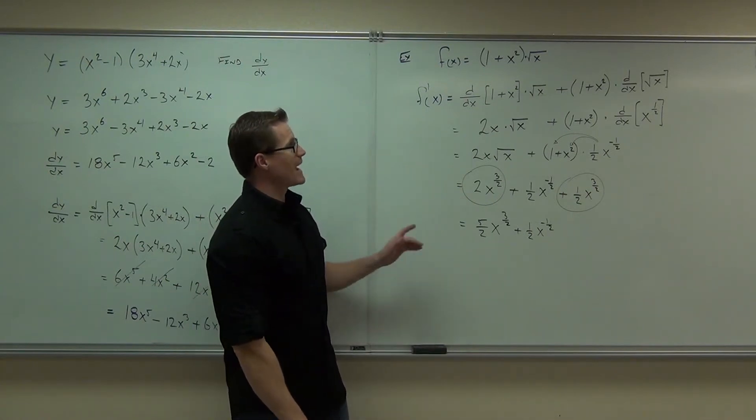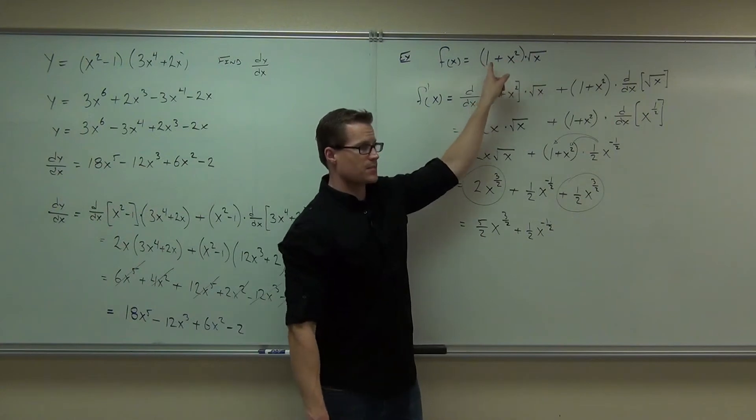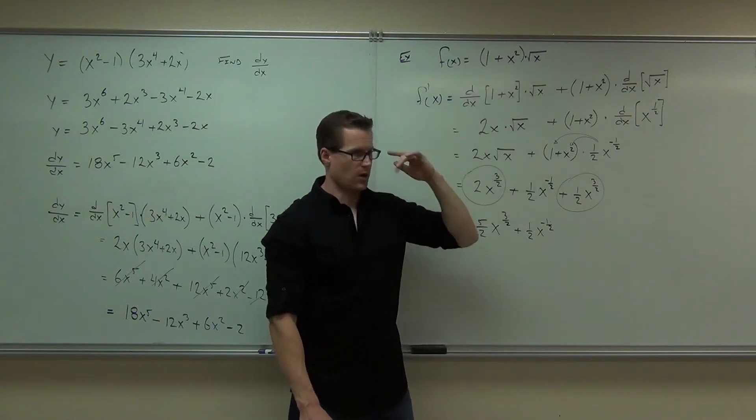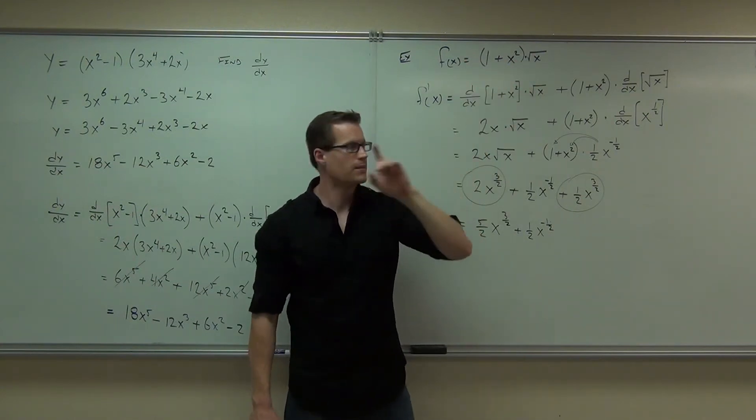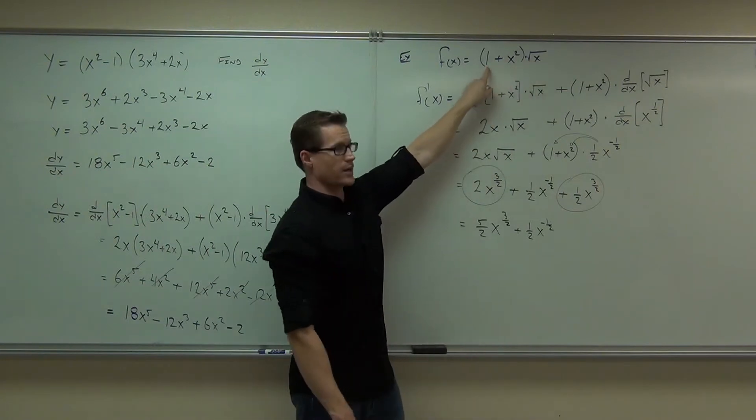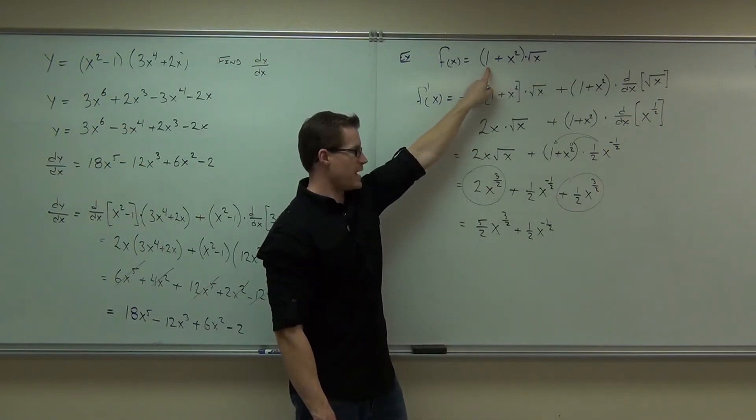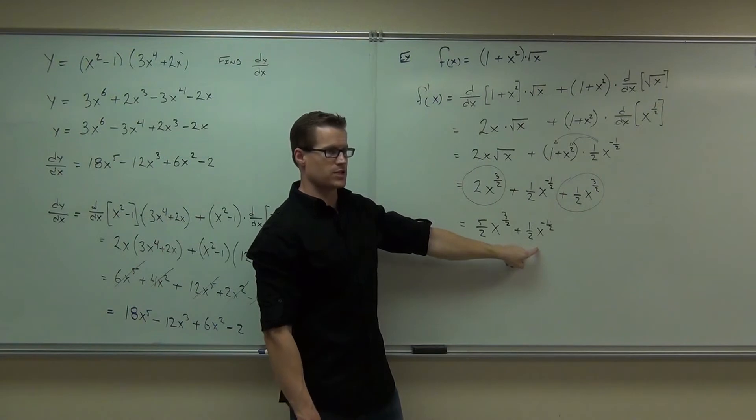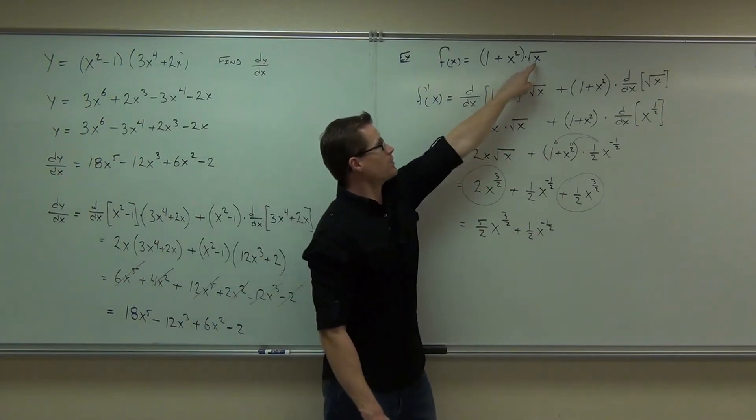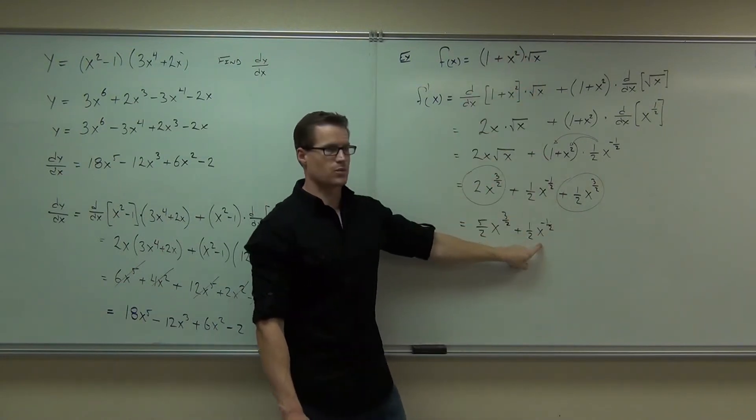If you wanted to leave it in terms of exponents, that's probably what you would end up with. That's actually exactly what you'd get if you distributed this and then took the derivative. Just do it in your head if you want to. If you distribute this, you're going to get root x, right? Square root of x. The derivative of that is this right there. You see it? The derivative of this is this one. You follow?